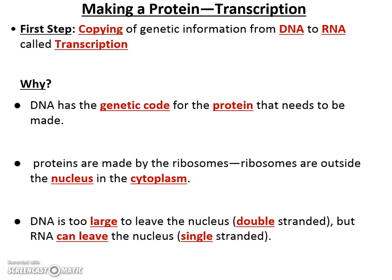Transcription is important because DNA has your genetic code and your proteins need to be made. It happens in the nucleus. Once the DNA is transcribed into RNA, the RNA can then leave the nucleus, travel through the cytoplasm, and find a ribosome where proteins are made. DNA is too large to leave the nucleus — that has to do with its double strandedness. RNA is small enough as a single strand to get out through the pore.